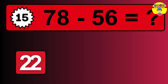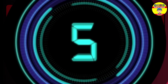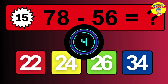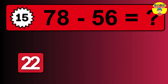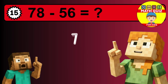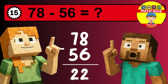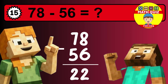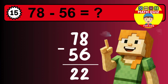What is 78 minus 56? Time to think. Then we go to the tens: 7 minus 5 is 2. The final answer is 22.